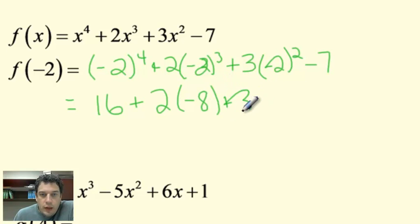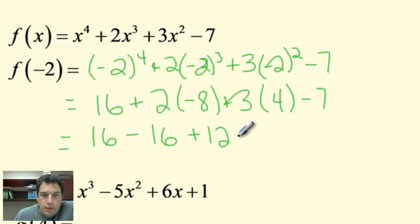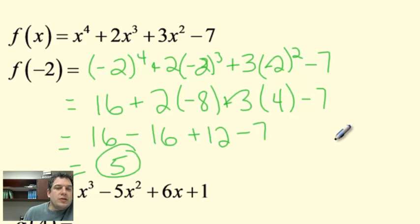Plus 2. Negative 2 to the 3rd is just negative 8. Plus 3. Negative 2 squared is just 4. Minus 7. Now we do the multiplication part. So we have 16 minus 16 plus 12 minus 7. 16 minus 16 is 0 plus 12 is 12 minus 7 is 5. Now, that's direct substitution. That's kind of boring. That's the usual way.